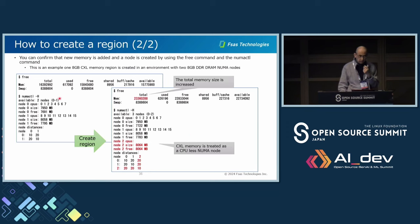You can confirm the new memory. New memory is added and a NUMA node is created, verified using the free command and the numactl command. In this example, an 8 GB CXL memory region is created in an environment with two 8 GB DDR DRAM NUMA nodes. The total memory size is increased by 8 GB, and a new CPU-less NUMA node is created.